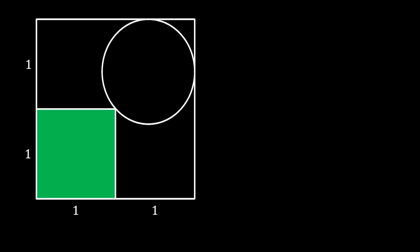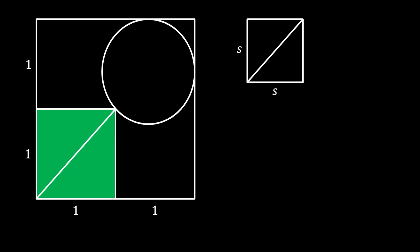Now we can draw the diagonal of this small square. A useful property of a square states that if we have a square with side s, we can calculate the diagonal as s times square root of 2. In our case, since the small square has a side of one, its diagonal must be equal to square root of 2.